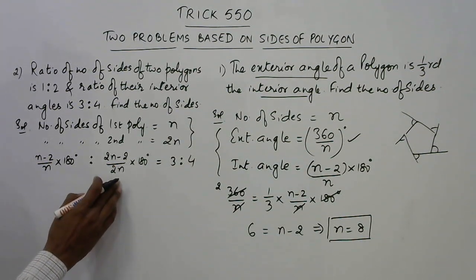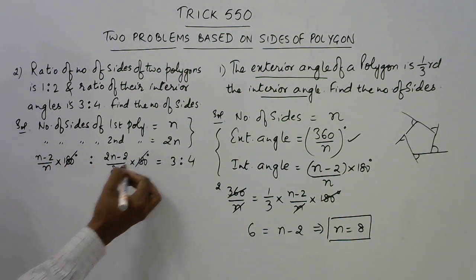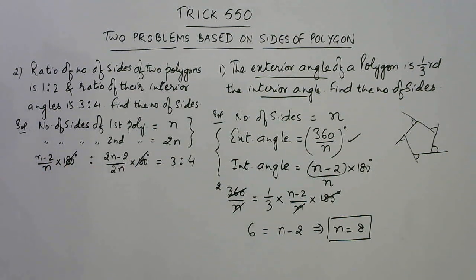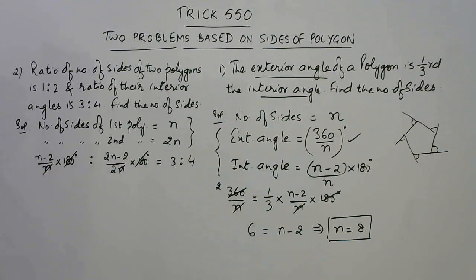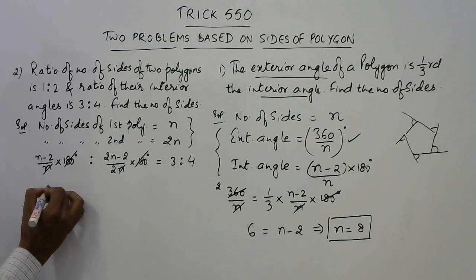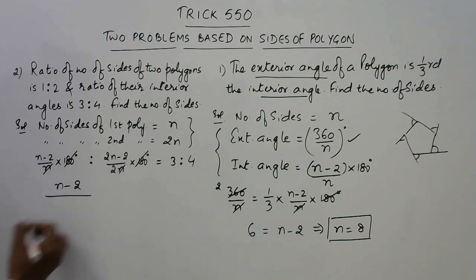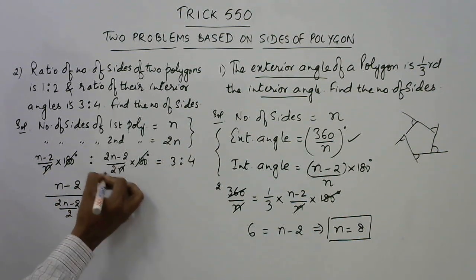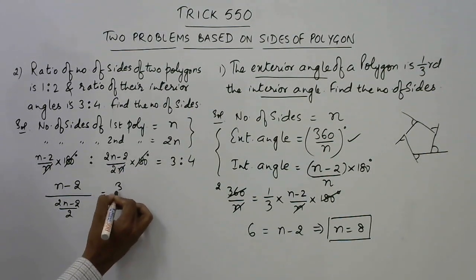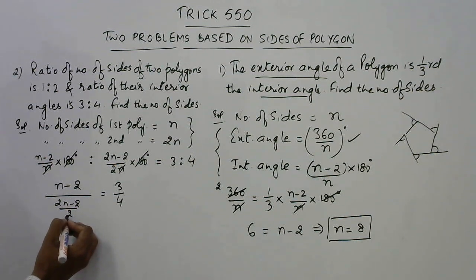See, whenever we are taking the ratio, we can cancel out the common factors. So this 180 will automatically get cancelled. After that, in the denominator, this n will also get cancelled, and remaining here we have (n minus 2) / 2 ratio (2n minus 2) / 2, that is this part, equal to 3 upon 4. And now very easy, just take this 2 in the numerator here.